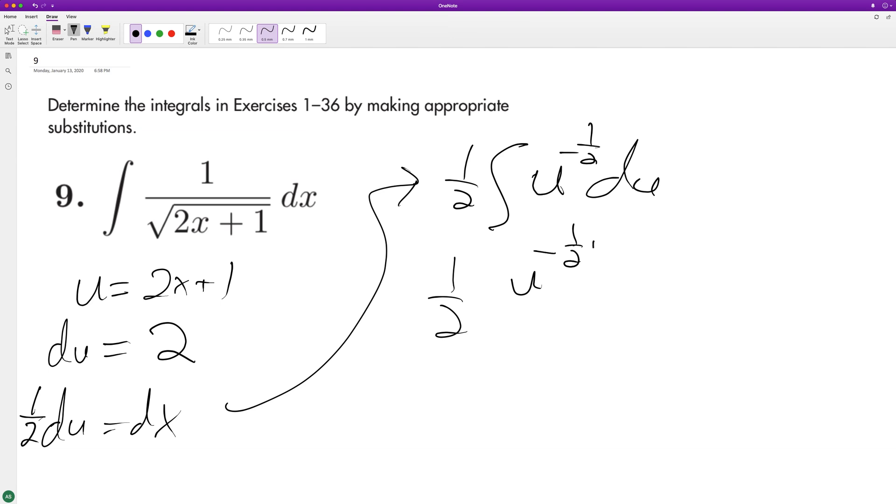So one half u raised to the one half over one half, same thing as one half times two u raised to the one half plus c. These cancel out and we're left with...